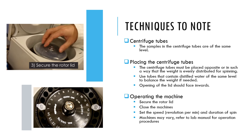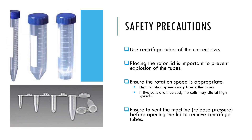The following are some safety precautions when using a centrifuge: use centrifuge tubes of the correct size. It is important to secure the rotor lid to prevent explosion of the centrifuge tubes. The rotation speed selected must not be too fast, as high rotation speeds may break the tubes. If live cells are involved, the cells may also die at high spinning speeds. Lastly, ensure to vent the machine by releasing the pressure before opening the lid to remove your centrifuge tubes.